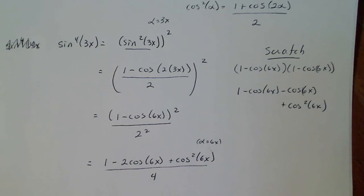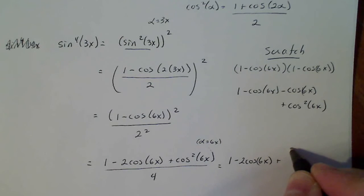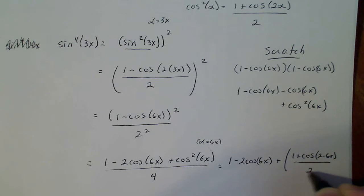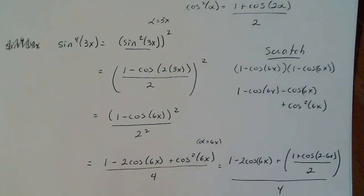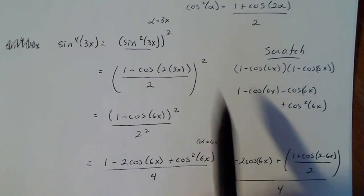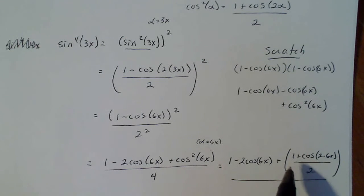I want to look at that identity here. So I'm going to put it in: 1 minus 2 cosine 6x plus 1 plus cosine of 2 times 6x, all divided by 2, all divided by 4. I just took this identity and substituted in for just this piece right here.